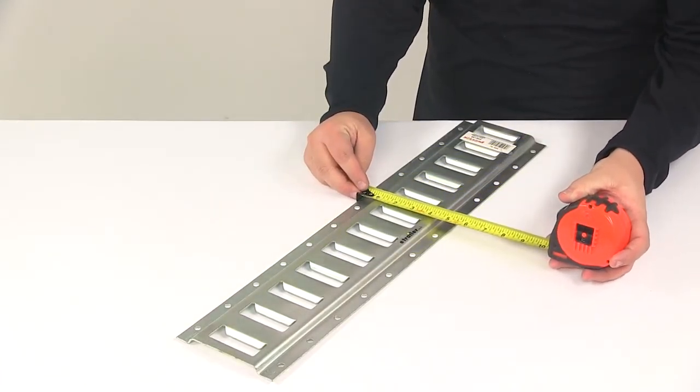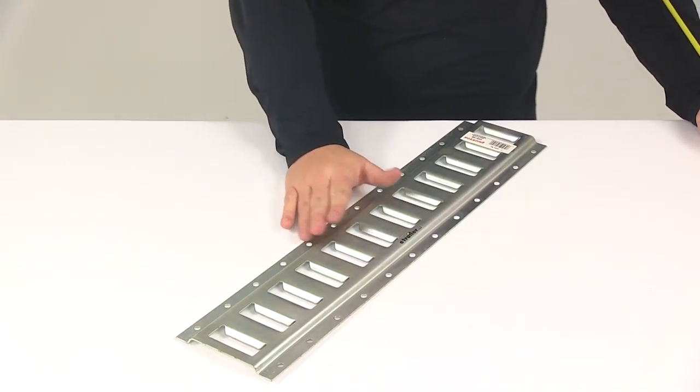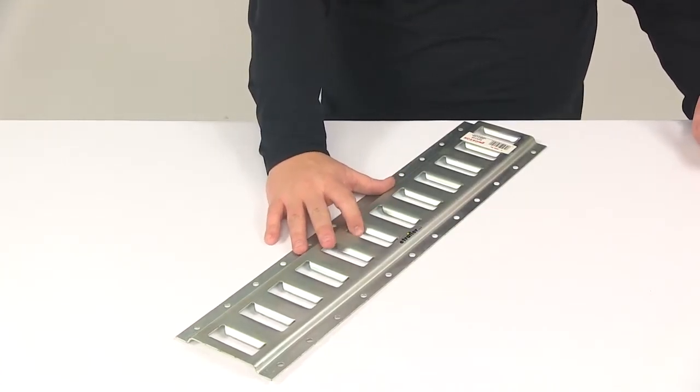Overall width from edge to edge measures five and one quarter of an inch. The overall height from bottom to top is seven sixteenths of an inch tall.